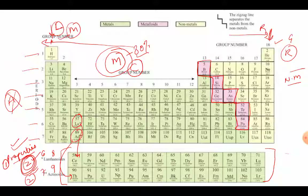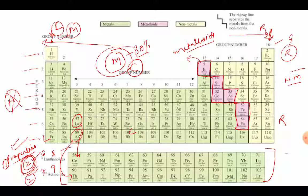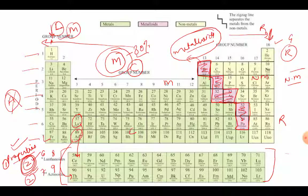This zigzag line is of another category of elements, and that is called metalloids. This is also an achievement: metals are on the left and center of the periodic table, non-metals are on the right of the periodic table, and metals and non-metals are separated by a zigzag line of metalloids. Metalloids are those elements which have properties similar to both metals as well as non-metals. Such elements are called metalloids.